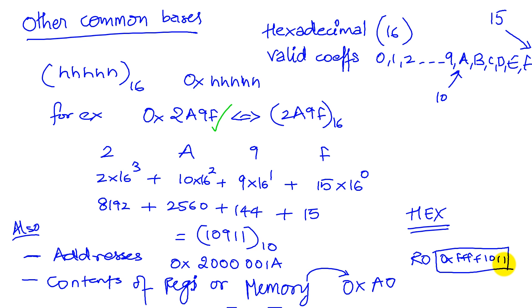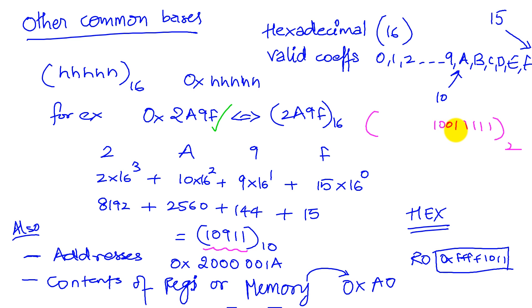One of the convenient things about representing hex is that it alleviates the burden of having to represent binary numbers in their entirety. In fact, the number 10911, if we were to express it in base 2, would look like: 1, 1, 1, 1, 1, 0, 0, 1, 1, 0, 1, 0, 0, 0, 0, 0, 0, 0, 0, 0. Remember, all the digits are binary.